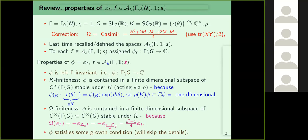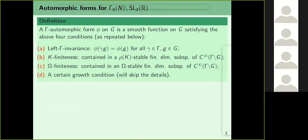These are the four conditions: left-Gamma-invariance, K-finiteness, omega-finiteness, and a growth condition. Repeating them on the next page will constitute our definition of an automorphic form. A Gamma-automorphic form phi on G is a smooth function on G satisfying these four conditions.